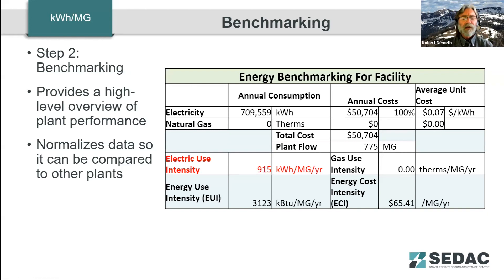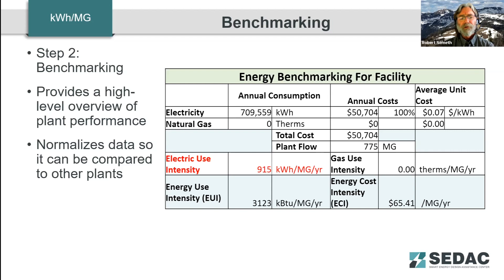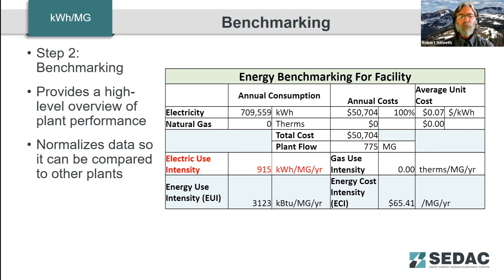We take that information and create a benchmarking table. Of particular interest is the electric use intensity, highlighted in red — it's kilowatt hours per million gallons per year. It tells us how well a plant is performing. This one's at 917 kilowatt hours per million gallons per year, which is very good. You'll see very soon that there are much higher numbers we encounter. This provides a high-level overview and normalizes the data so we can compare one plant to another.